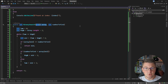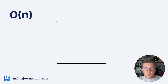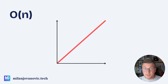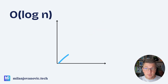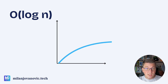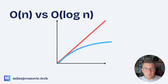So why is binary search so useful? We need to talk about algorithm complexity. Linear search becomes slower as the number of elements increases — it has a complexity of O(n). Binary search has a complexity of O(log n), which doesn't increase nearly as rapidly. Comparing them side by side, after a certain point as the array size grows, binary search becomes significantly faster, which is precisely why it's so valuable.